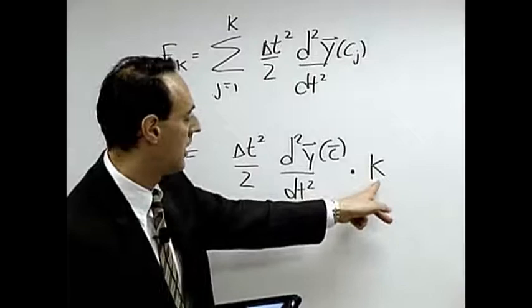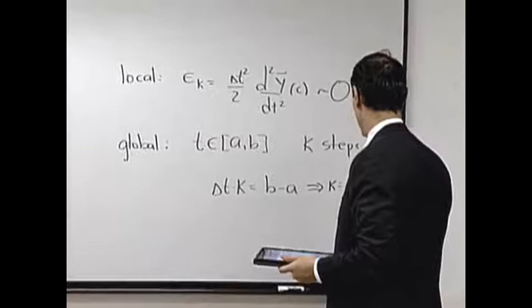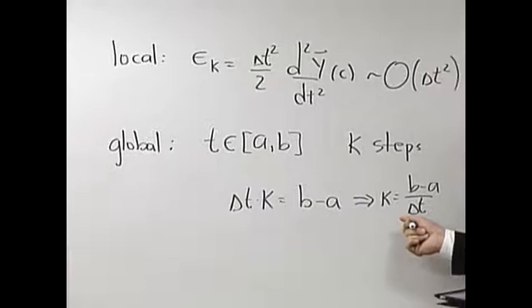Now k, by the way, how do I get k? Well, k is my number of steps. If I come back over here, this is important here—Δt times k is the interval difference, so you get k is equal to b minus a over Δt. Okay, simple math. Remember, we're not going to go anything above Taylor expansions.